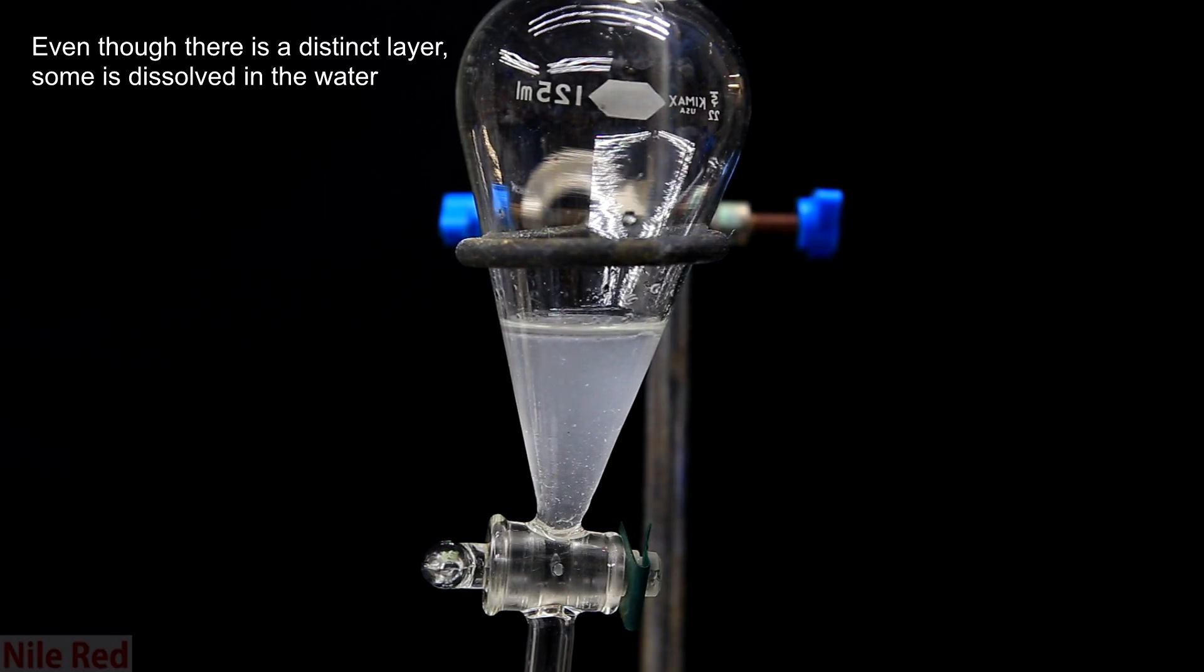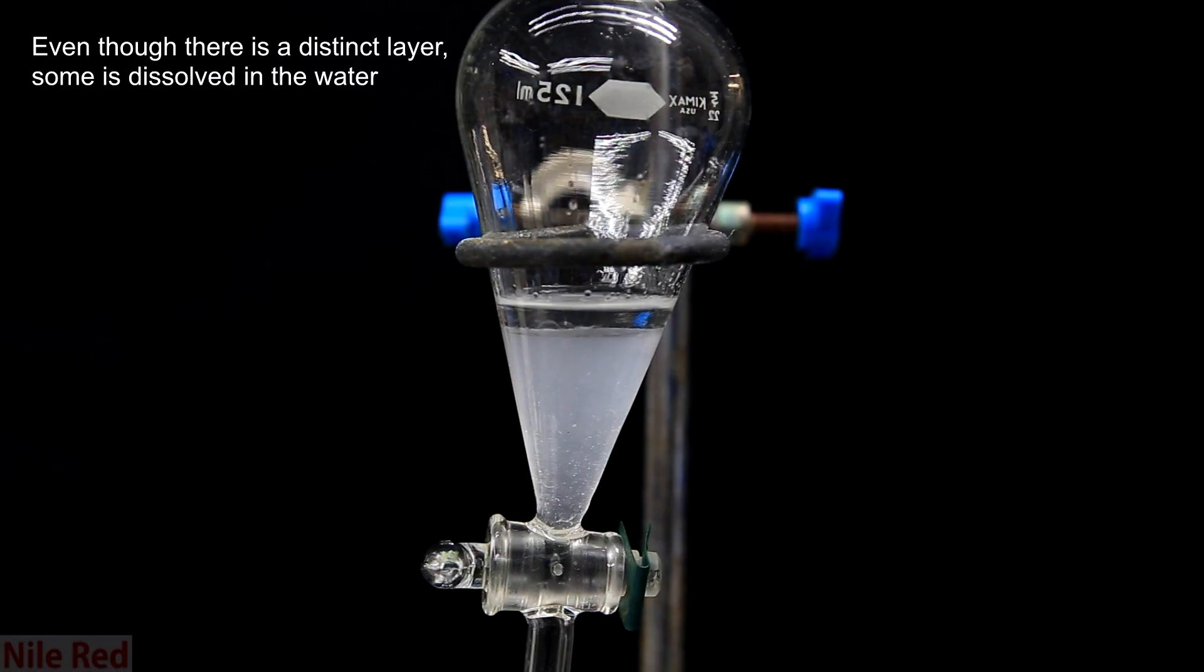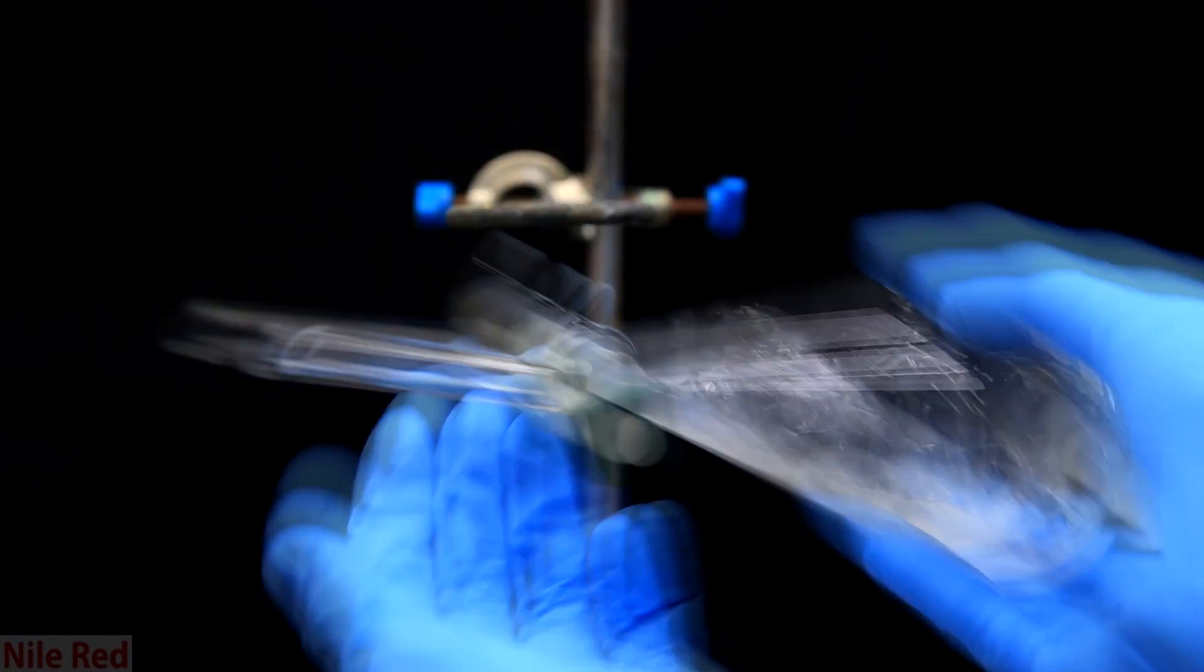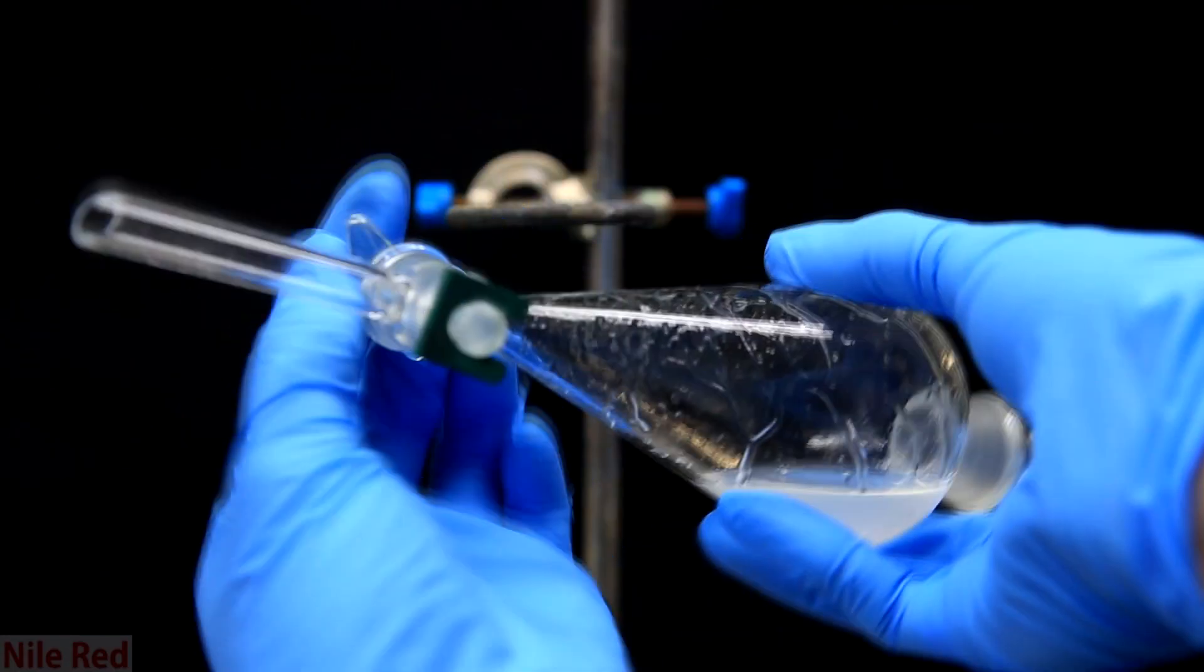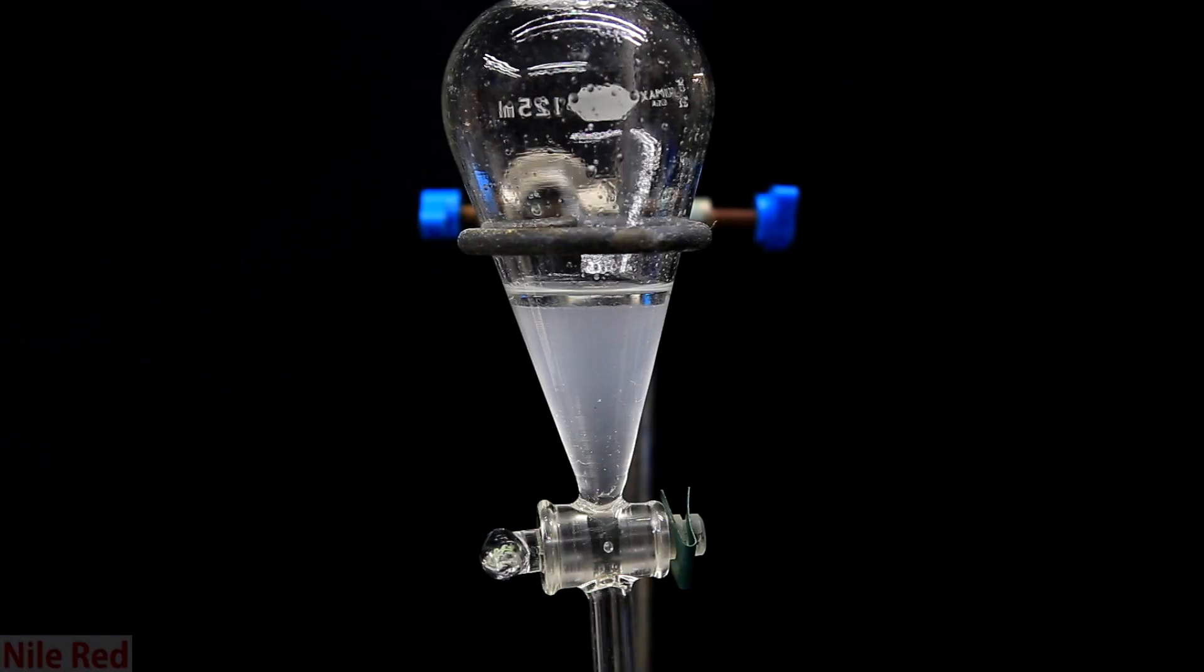Now it's time to extract our desired product from this mixture and so we add 5 milliliters of diethyl ether. I then shake up the separatory funnel with frequent venting to make sure that no pressure builds up. Once I feel things have been thoroughly mixed I put it back on the stand and I let the layers separate.